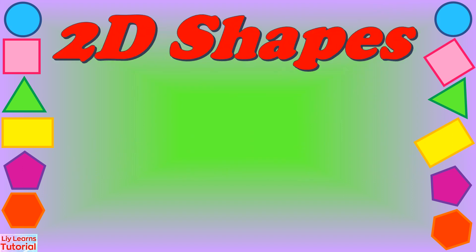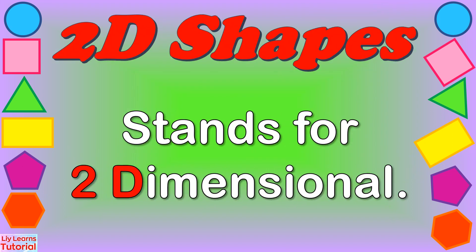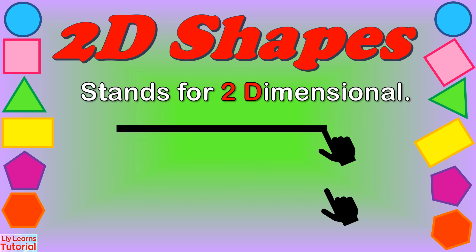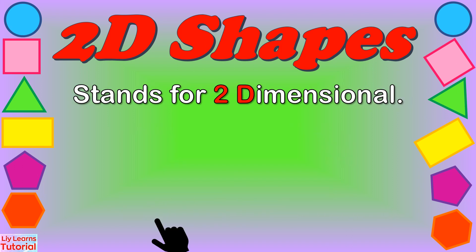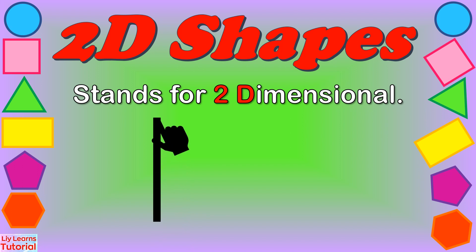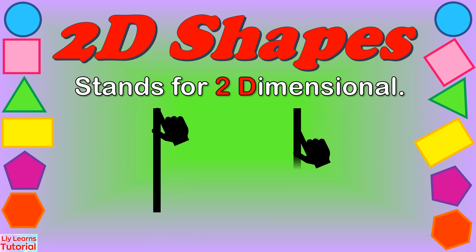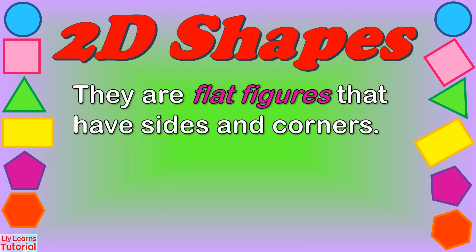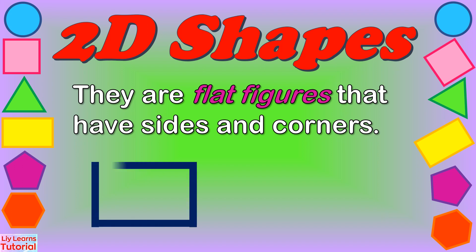2D Shapes stands for Two-Dimensional. Two dimensions have length and width. One can draw from left to right or right to left. You can also draw up and down. They are flat figures that have sides and corners. Since they are flat, one can trace or draw them on a piece of paper. Some have straight sides and others have curved sides.